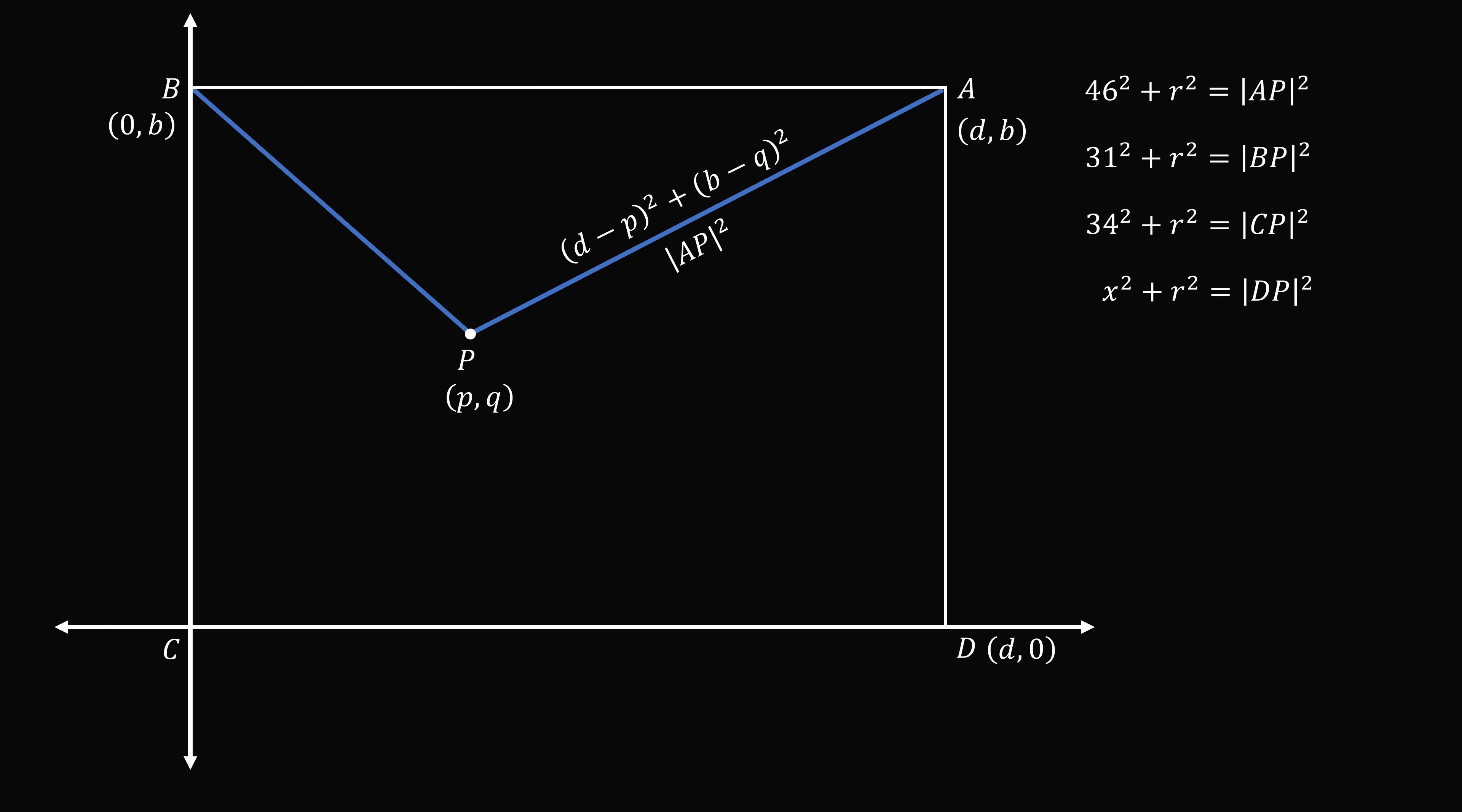Let's do the same thing for BP. The square of the distance BP is equal to p squared plus the square of (b minus q). Do the same thing for CP. This square distance will be equal to p squared plus q squared. And finally, we calculate the square of the distance DP. This will be equal to the square of (d minus p) plus q squared.